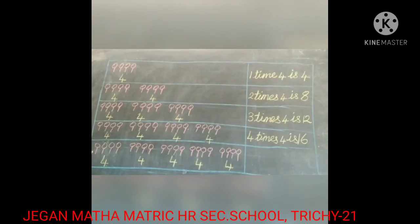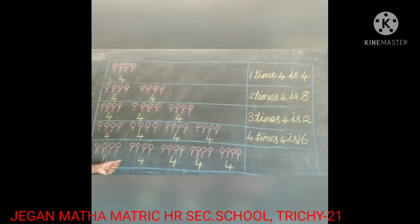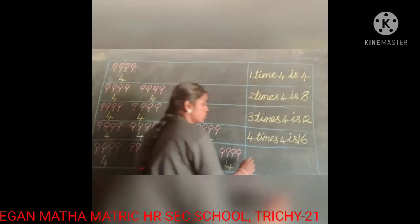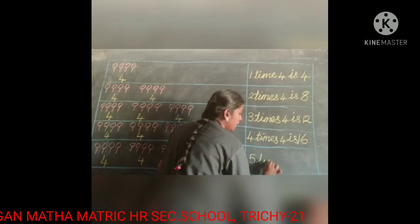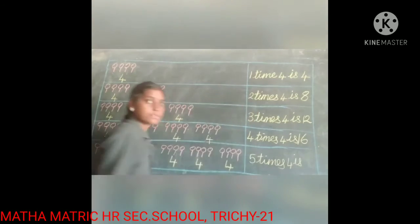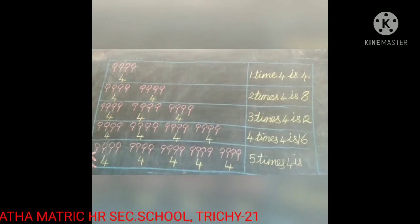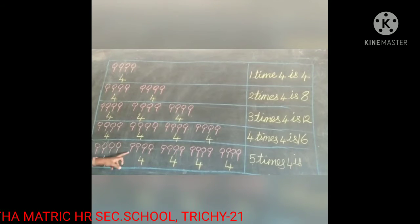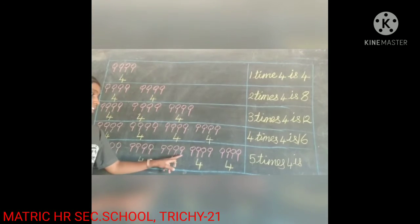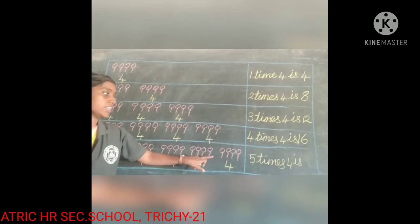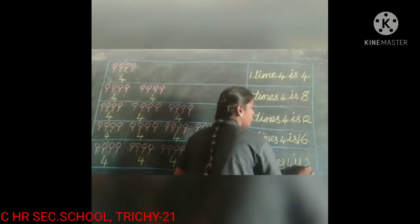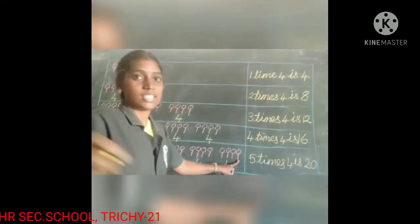Next, look at the fifth box. How many 4's are there? 1, 2, 3, 4, 5 — five times. So write: 5 times 4 is... Count all: 1, 2, 3, 4, 5, 6, 7, 8, 9, 10, 11, 12, 13, 14, 15, 16, 17, 18, 19, 20. So 5 times 4 is 20.